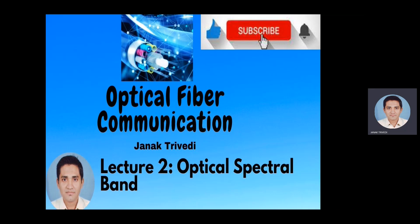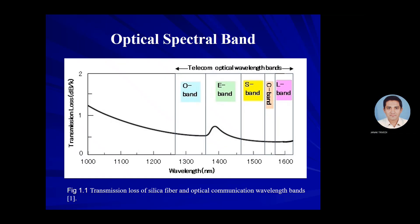Hello, in this module of optical fiber communication, we will learn about optical spectral band. Fiber optic communication is mainly conducted in the wavelength region where optical fiber have small transmission loss. This low-loss wavelength region ranges from 1260 nanometer to 1625 nanometer, as shown in the figure with the transmission loss of silica fiber and optical communication wavelength band.